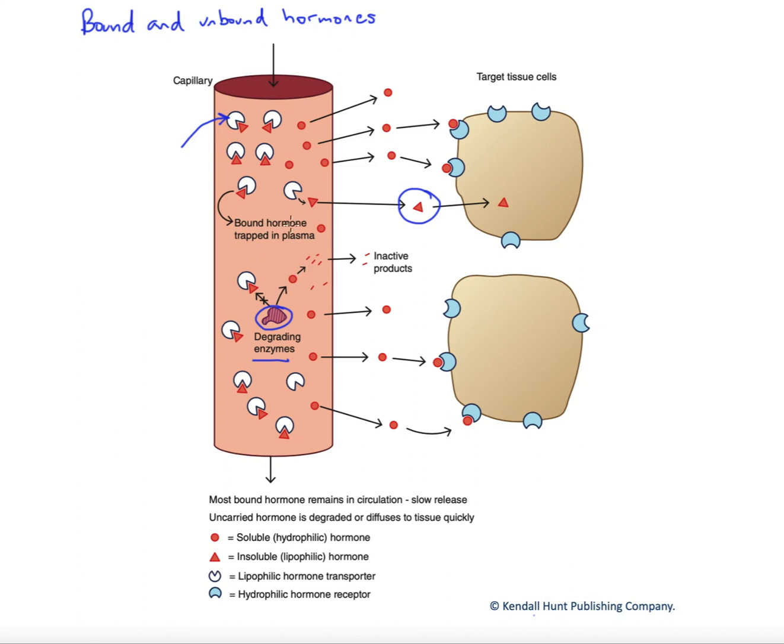We can also look at our hydrophilic hormones. Most of our hydrophilic hormones, peptide protein hormones and others, tend to be unbound and therefore readily diffuse out of capillaries and bind their target cells. They can also be degraded by these enzymes, these plasma enzymes, and end up producing inactive degradation products, wiping out our response to these particular hormones fairly quickly.